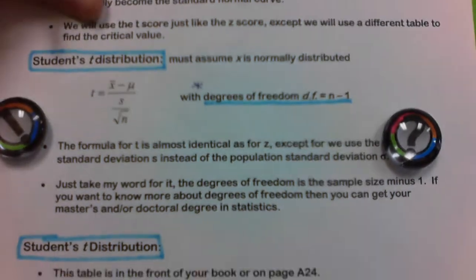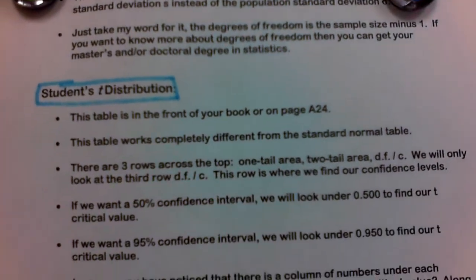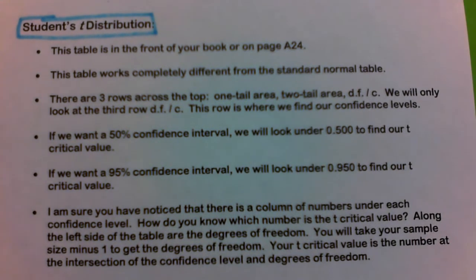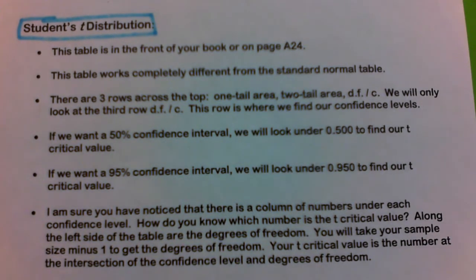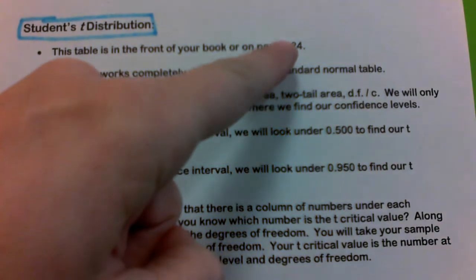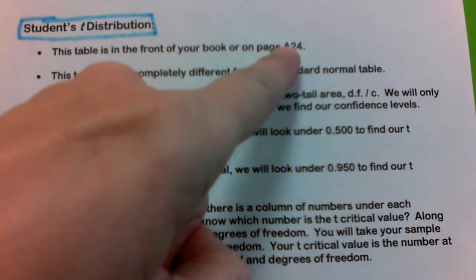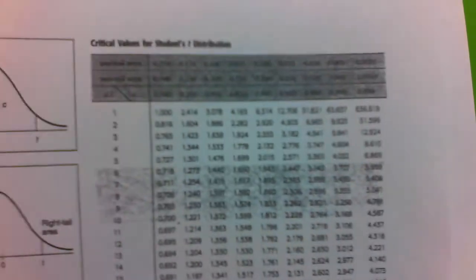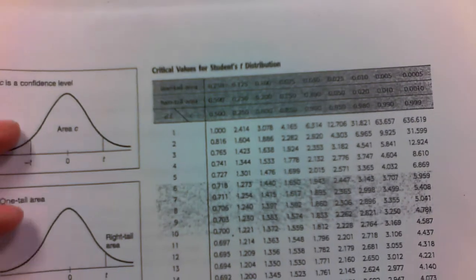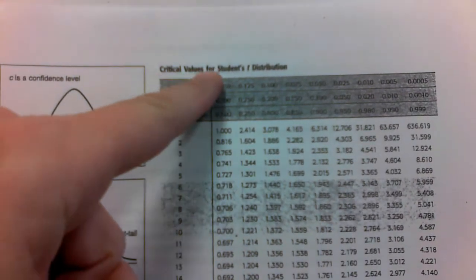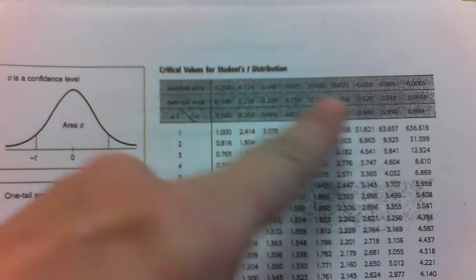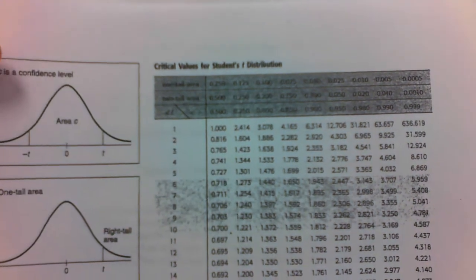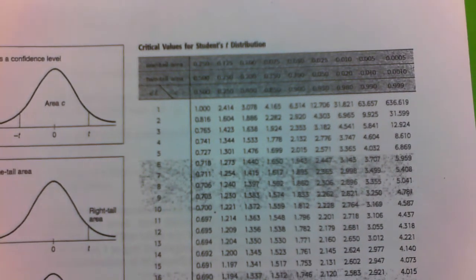We're going to talk about the Student's T distribution, which is also known as the T table. You can find that in the front or back of your book, or in the appendix on page 24. This is what it's going to look like — it says 'Critical Value for Student's T Distribution.'